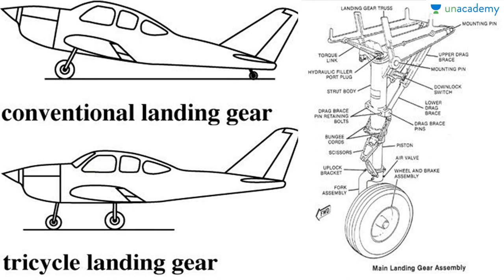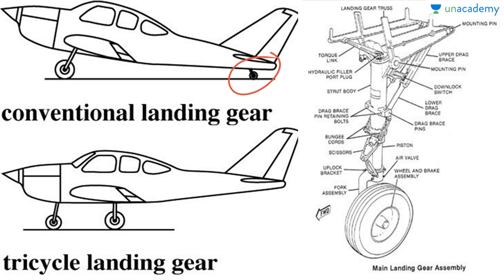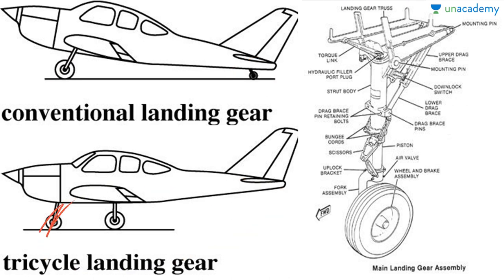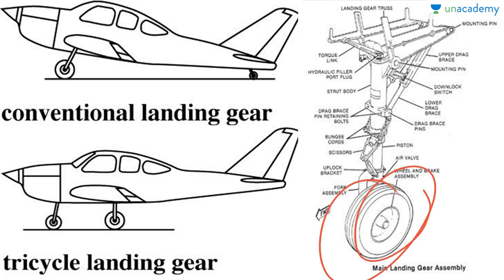There are two types of landing gear: the conventional landing gear, where the front landing gear is large and the back landing gear is very small so the airplane stands at a slant, and the tricycle landing gear, where there is one gear in the front and two in the back — one on the right and one on the left. There is also a diagram here showing a strut attached to the landing gear wheel.